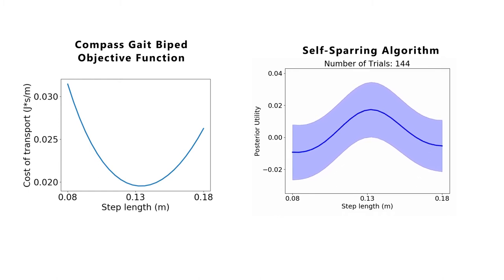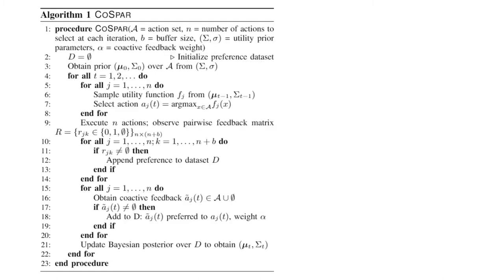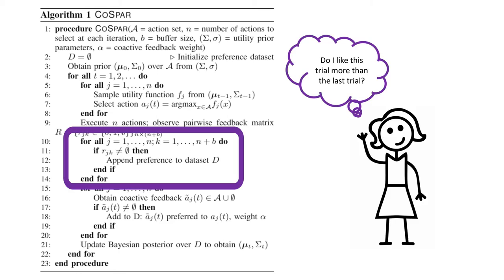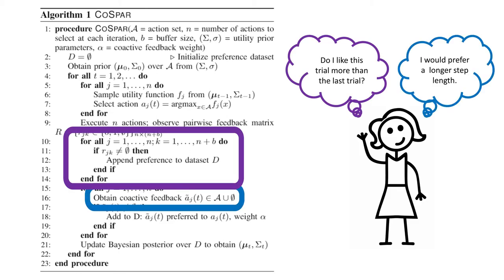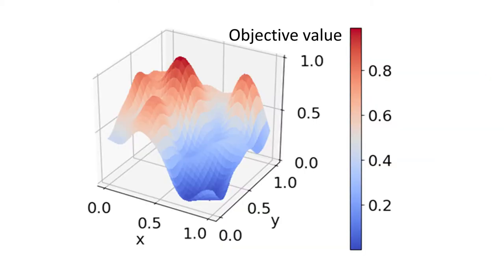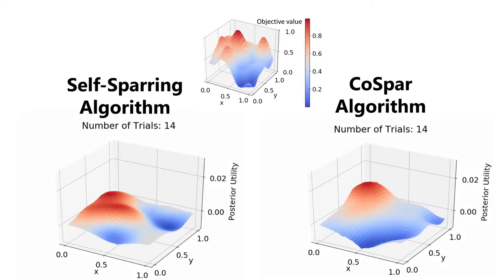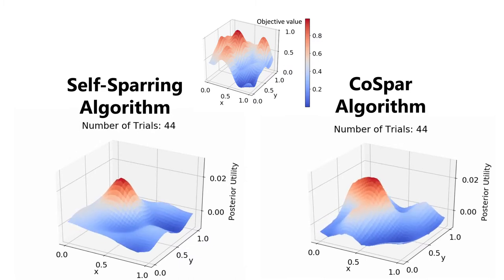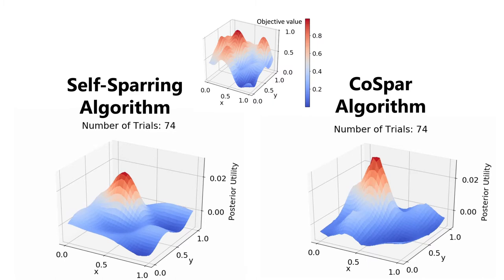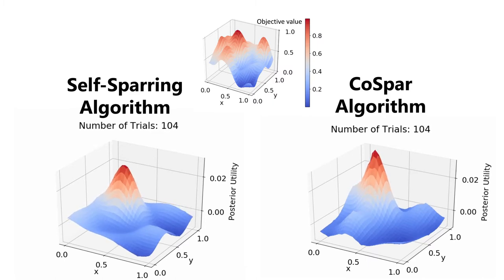To minimize the number of trials needed, we propose the COSBAR algorithm, which compares each trial to previous trials and incorporates co-active feedback. We demonstrate COSBAR in simulation on two-dimensional functions such as this one. This animation illustrates how the preference model's posterior mean evolves after each trial. The additional preference data and co-active feedback enable COSBAR to identify the optimum more quickly.